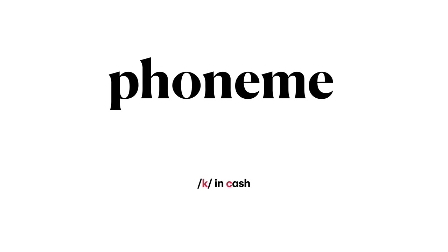Let's examine some examples of phonemes in English. By convention, phonemes are written inside slashes, as you see here. In the word 'cache,' the first phoneme in the word is /k/, represented here inside slashes with the symbol k in the International Phonetic Alphabet.